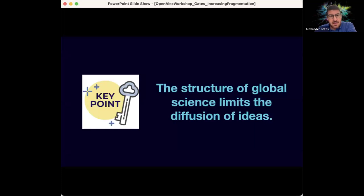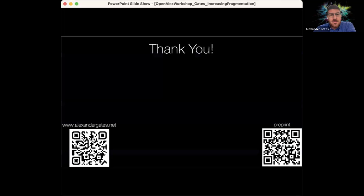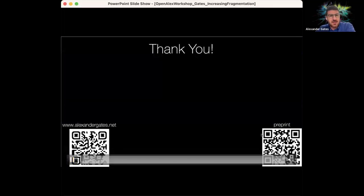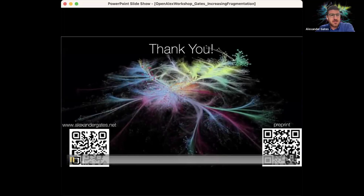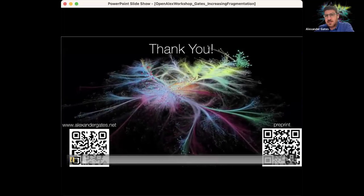So these networks really are capturing an important aspect of how information diffuses within global science. So the key point there is the structure of global science limits the diffusion of ideas. Thank you so much for your time and attention. There's a preprint available online as I mentioned and happy to answer any questions.